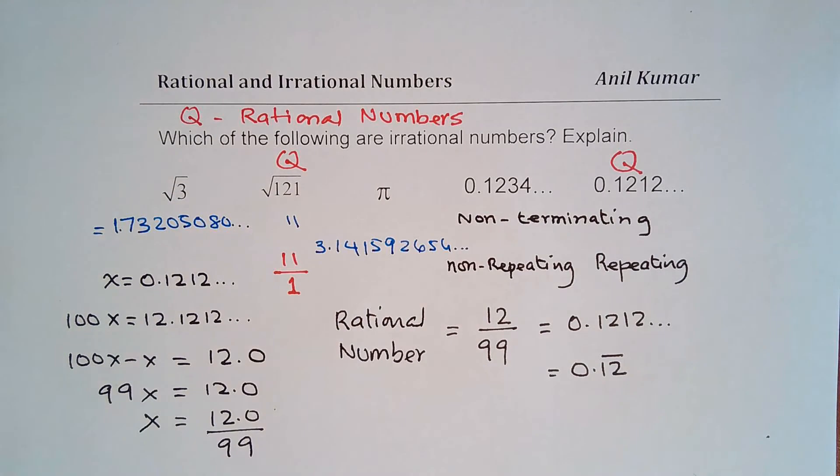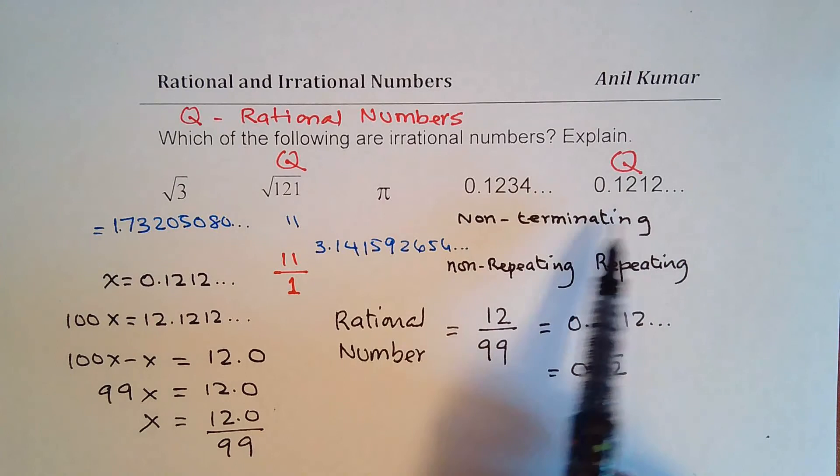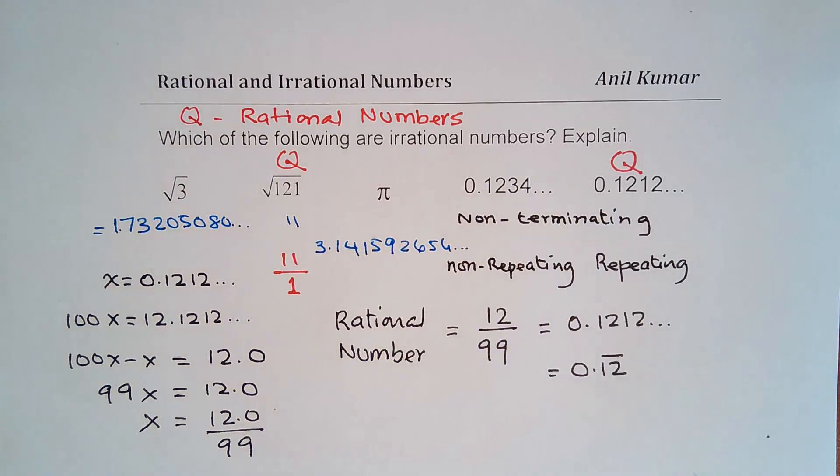So it is definitely a rational number. So I hope now it is clear to you how we can write repeating non-terminating numbers as a rational number and we are calling them as rational numbers. So that is how we could actually figure out whether a number is rational or irrational.